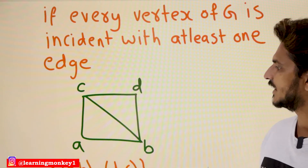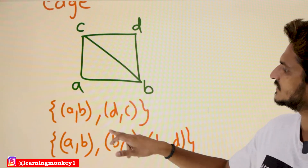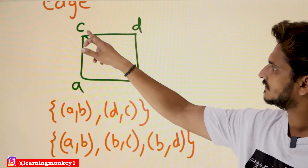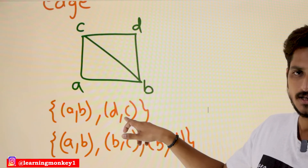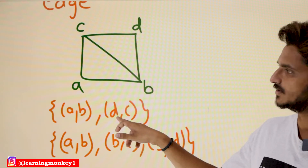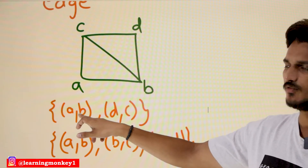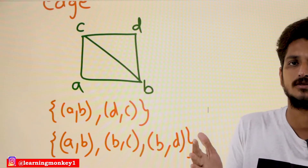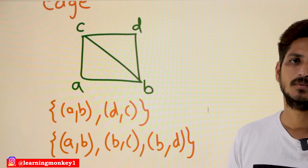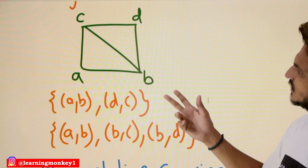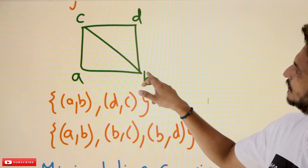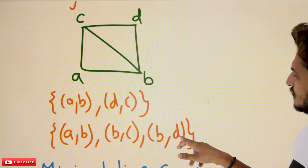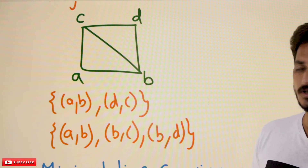With an example you will understand better. Take graph a-b-c-d. If we take the set of edges {a-b, d-c}: vertex c is in one edge, d is in one edge, a is in one edge, b is in one edge — this pair of edges covers all the vertices, so it is a line covering. You can also take {a-b, b-c, b-d} — this also covers all the vertices and is also called a line covering.